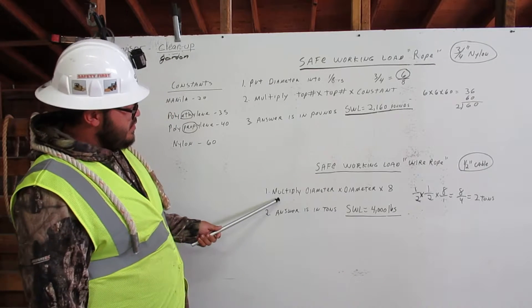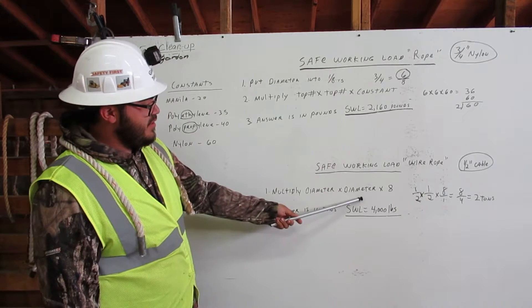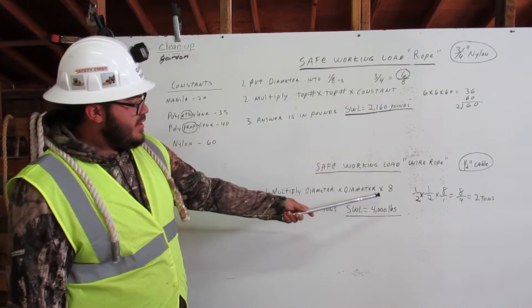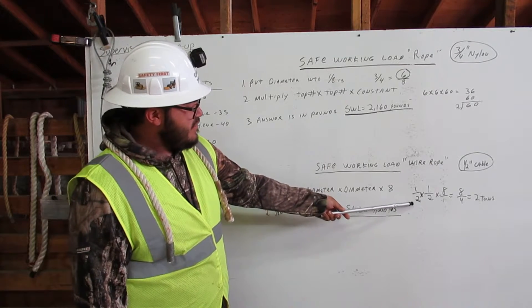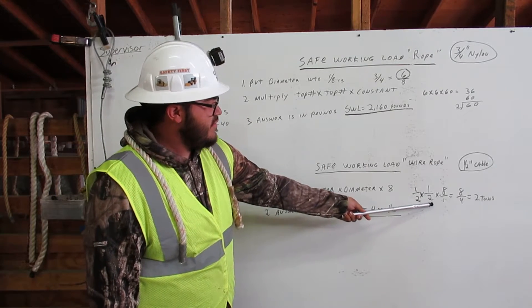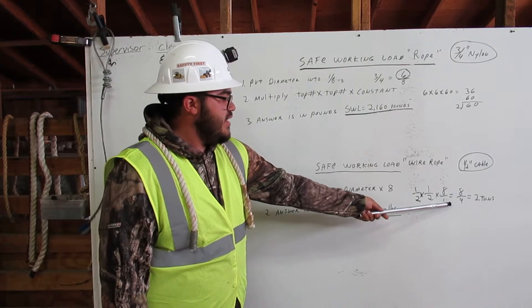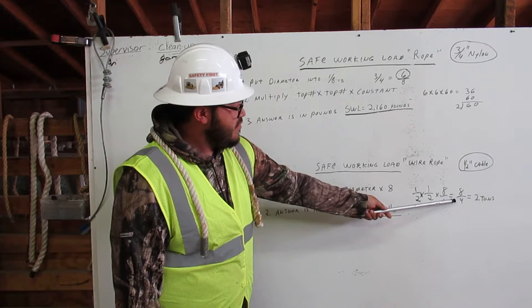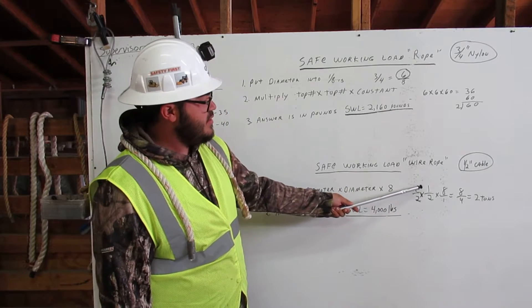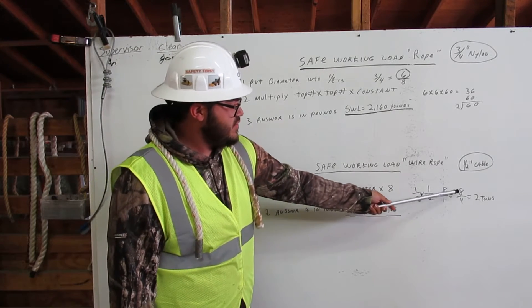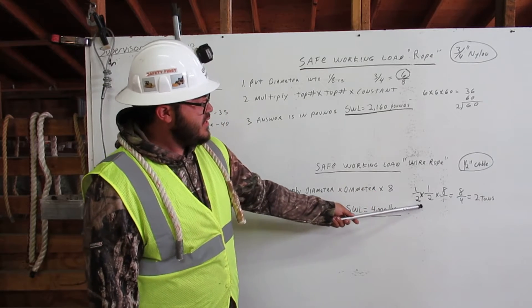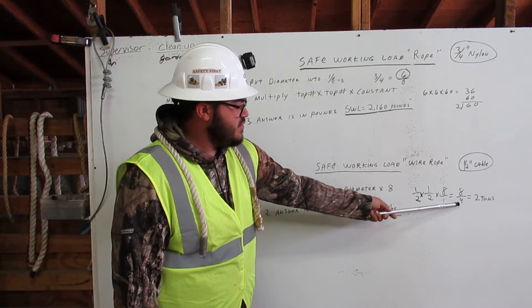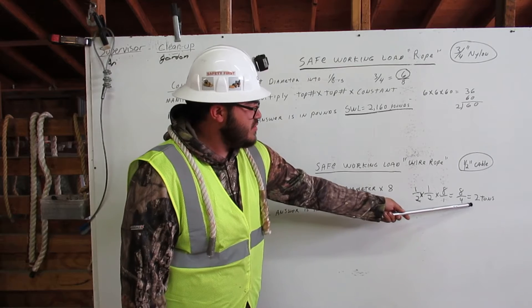First we will multiply diameter times diameter times eight. Here we have one half times one half times eight over one equals eight over four. So we go one times one times eight which equals eight. Two times two times one which equals four. Eight over four equals two tons.